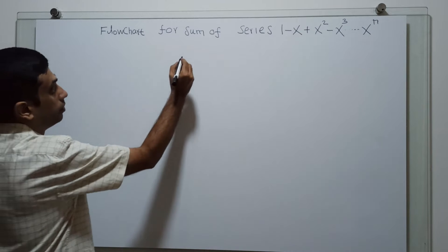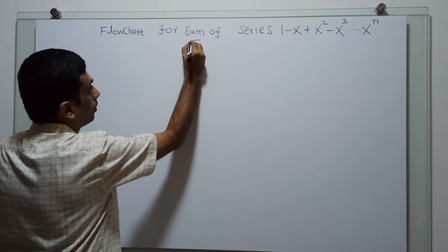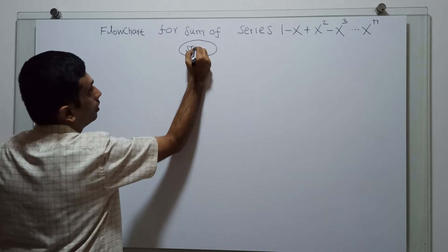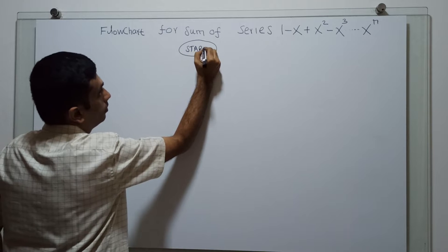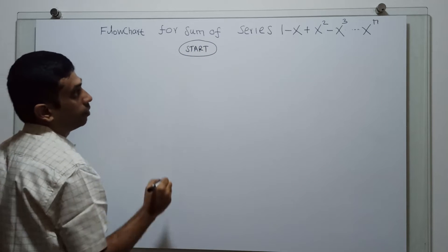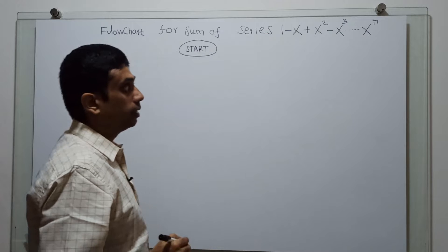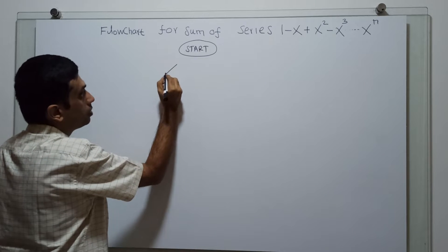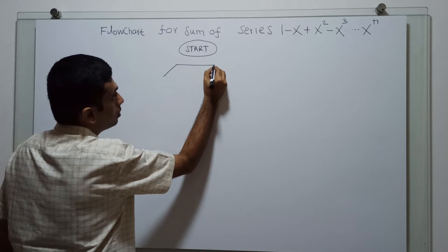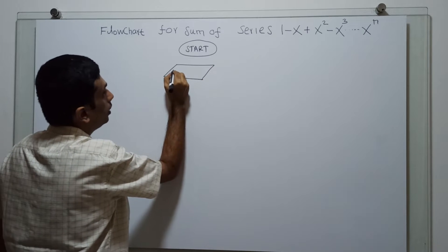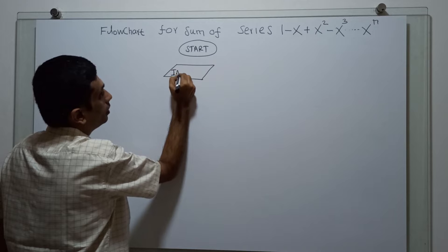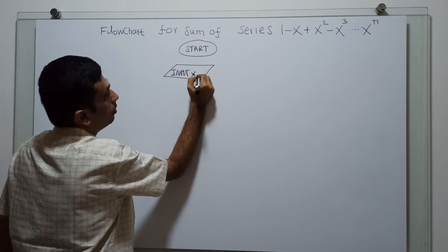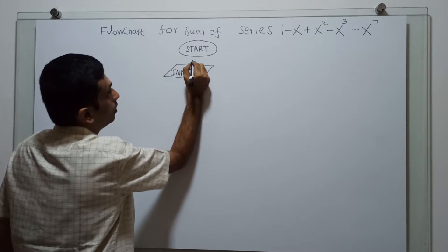We will start the flow chart. This is the logical start of the flow chart. I am obtaining the values of x and n as input.